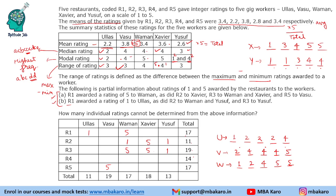Now we know the ratings of all people and we need to fill the table so the numbers balance. R3 has to give a total of 8 more ratings to Ullas and Vasu — only 4 and 4 is possible since 5 and 3 is not valid. So R3 gives 4 and 4 to Ullas and Vasu. We knock off the numbers that have been used: for Vaman 5, 1, 5; for Xavier 2, 5; and for Yusuf the two 1s.